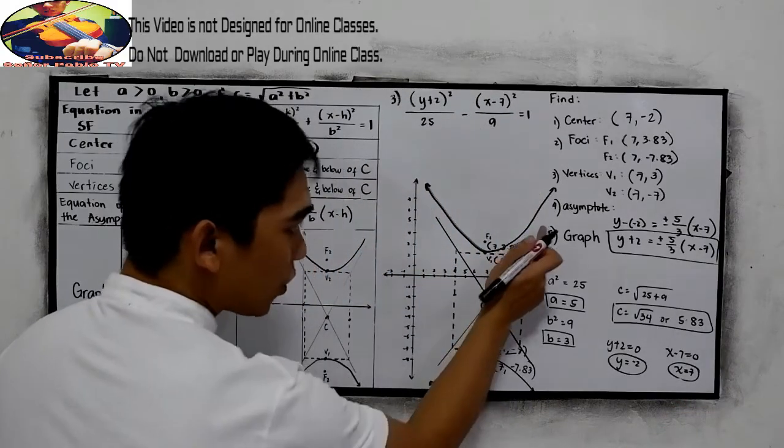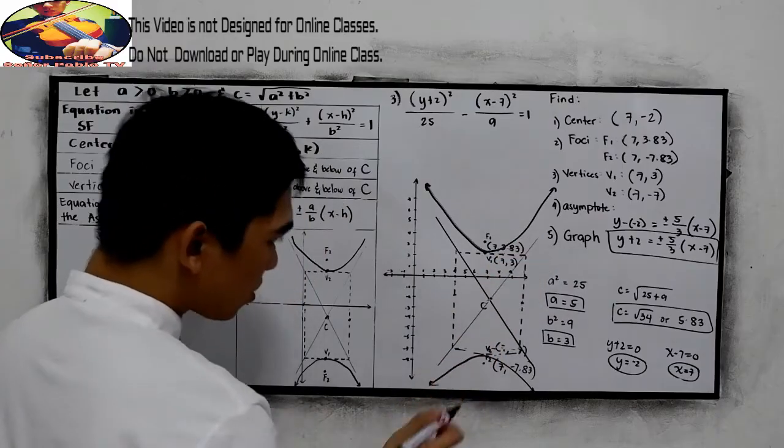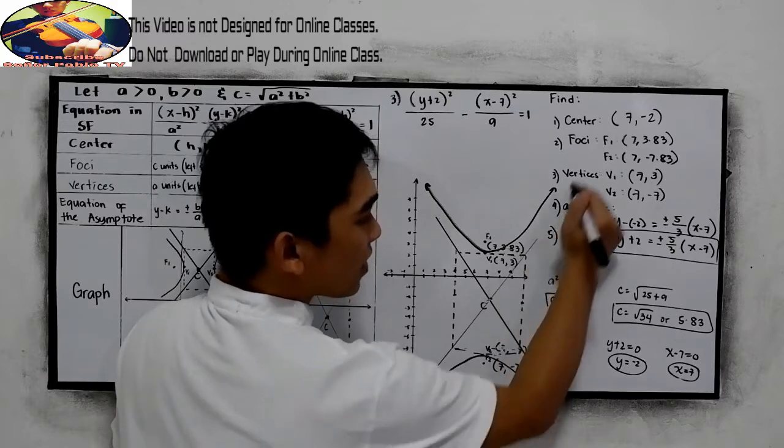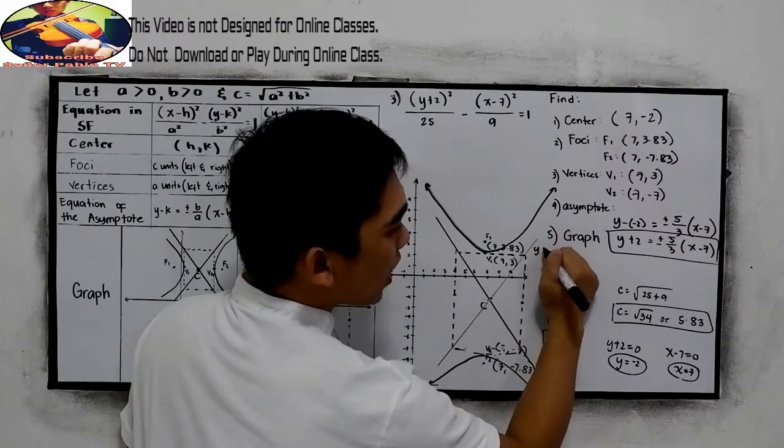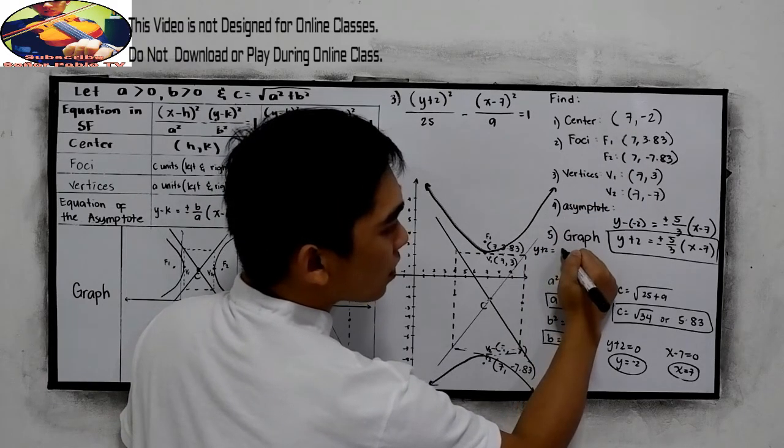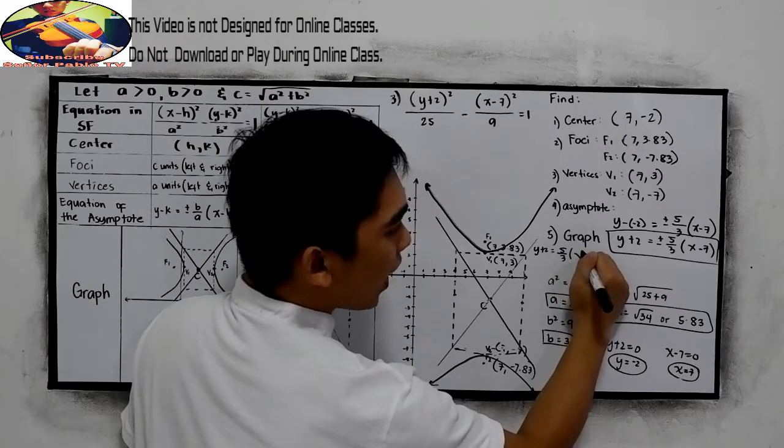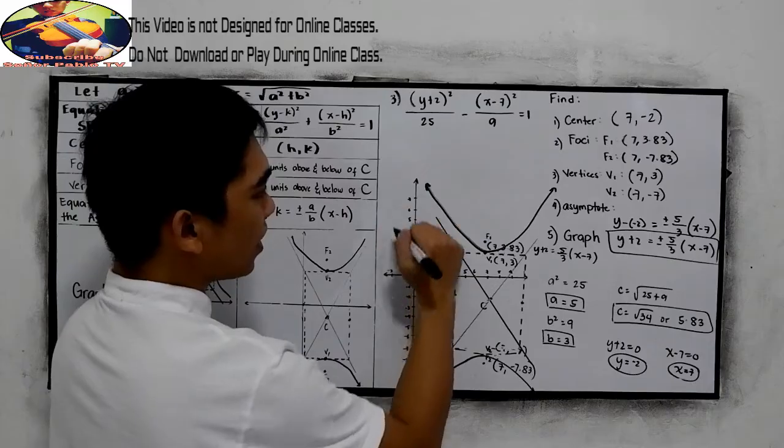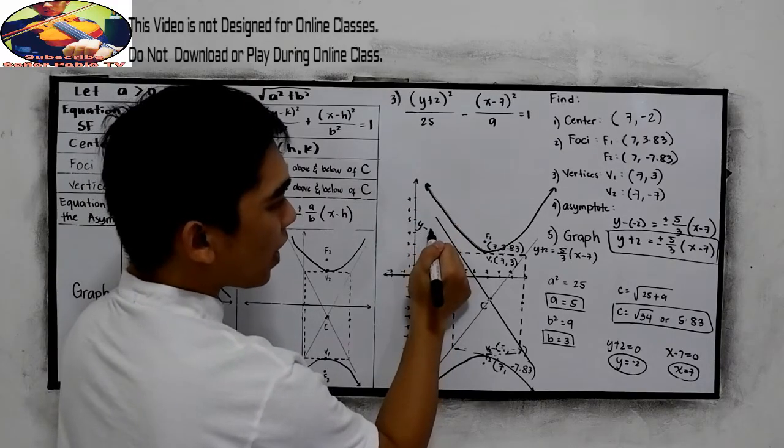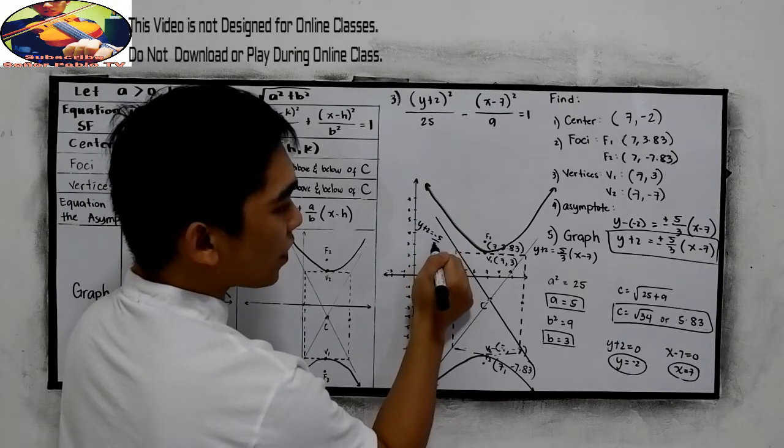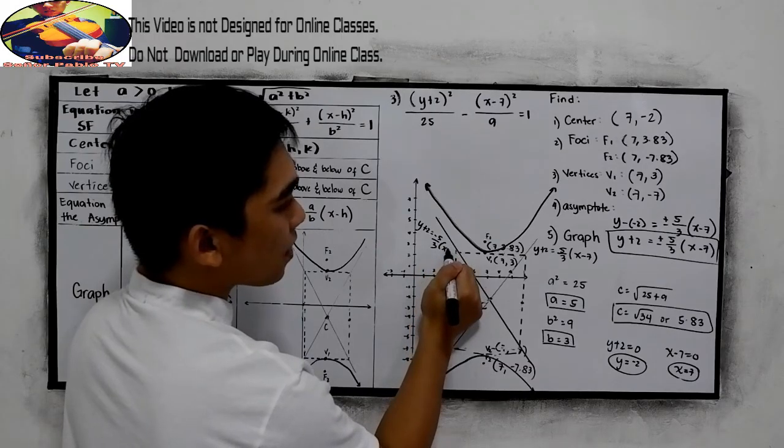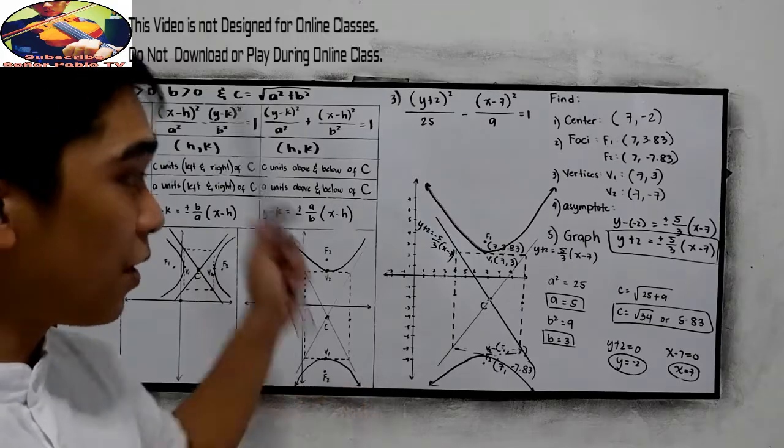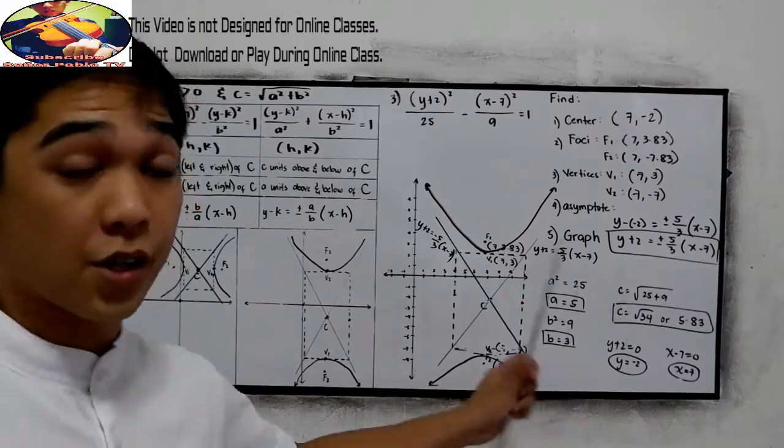So your teacher asks you to find the equation. So we have the slope of this is negative, a positive. So we have Y plus 2 is equal to 5 over 3 X minus 7. And in this case, the slope is negative. So the equation is Y plus 2 is equal to negative 5 over 3 X minus 7. That will be our answers. And of course, the graph.